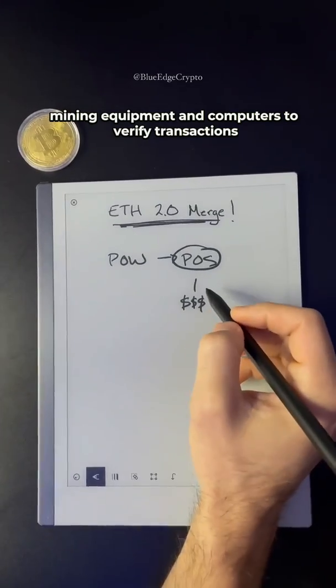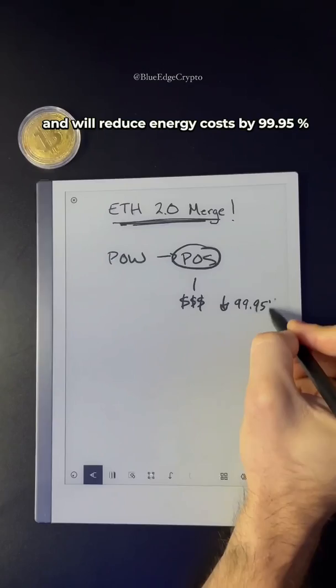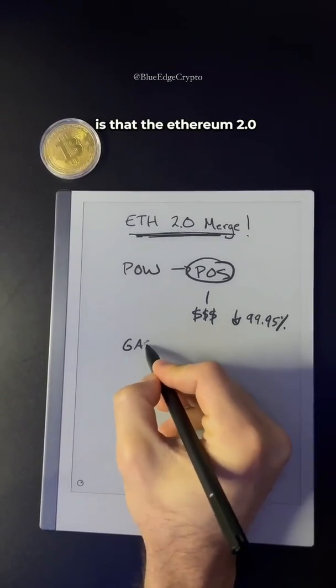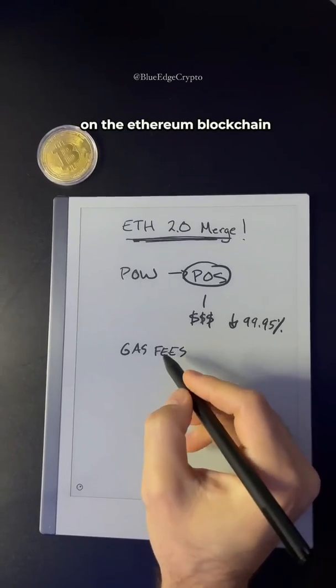This will reduce energy costs by 99.95%. However, the biggest misconception is that the Ethereum 2.0 merge is going to get rid of the astronomical gas fees on the Ethereum blockchain, but that is not the case.